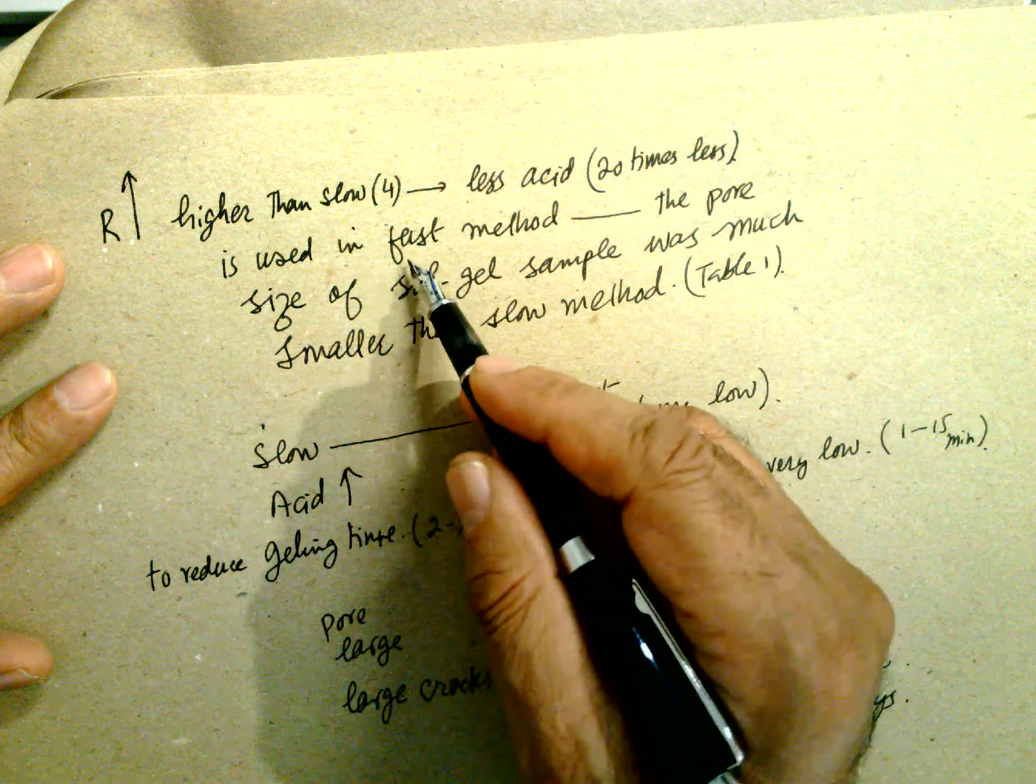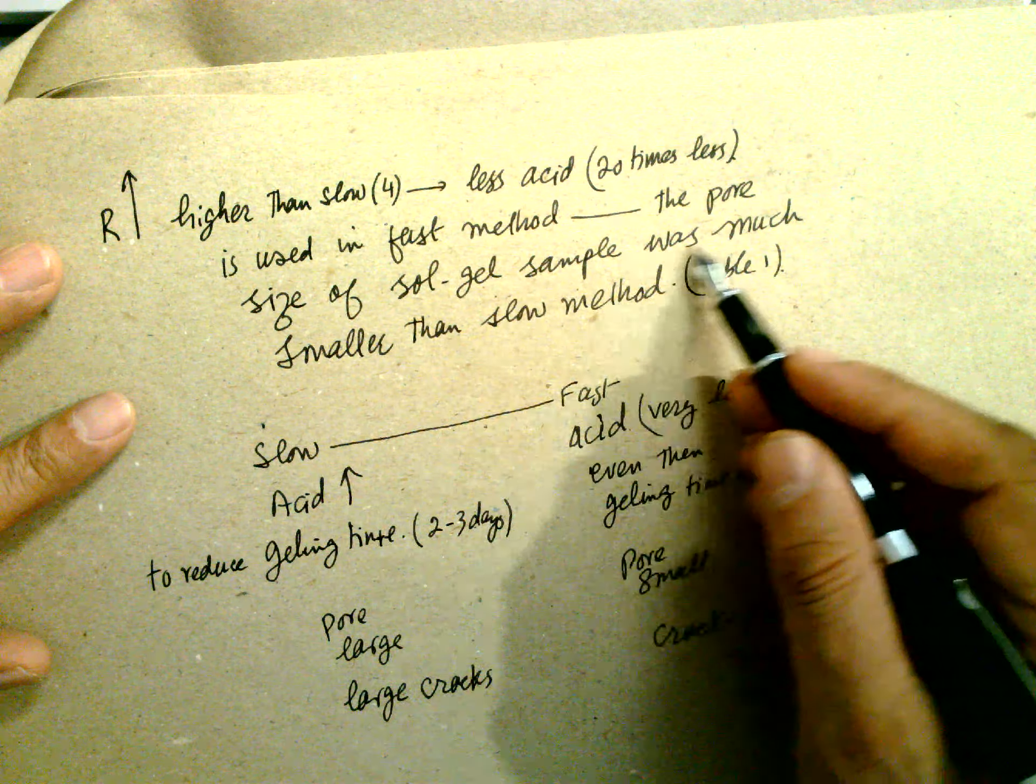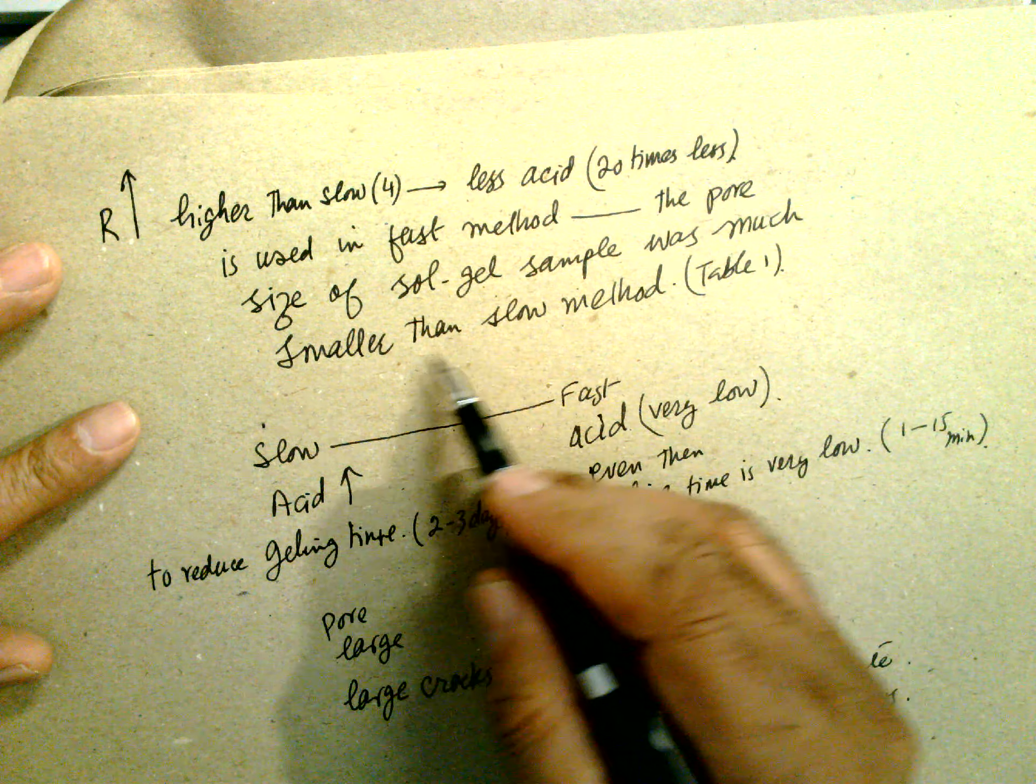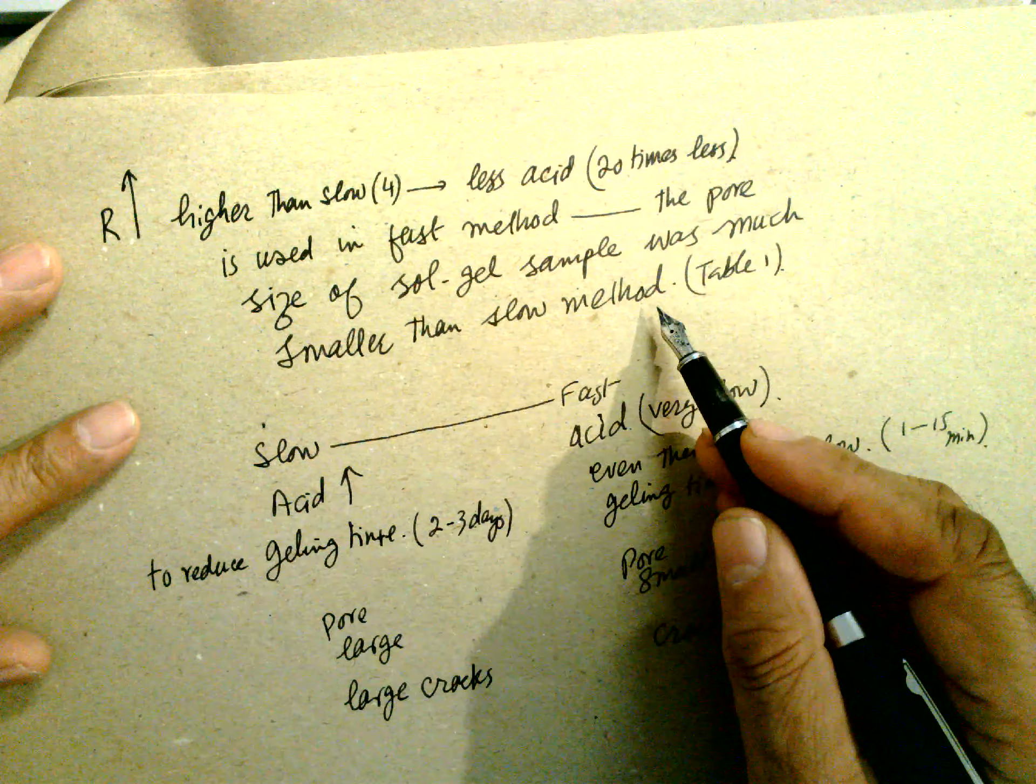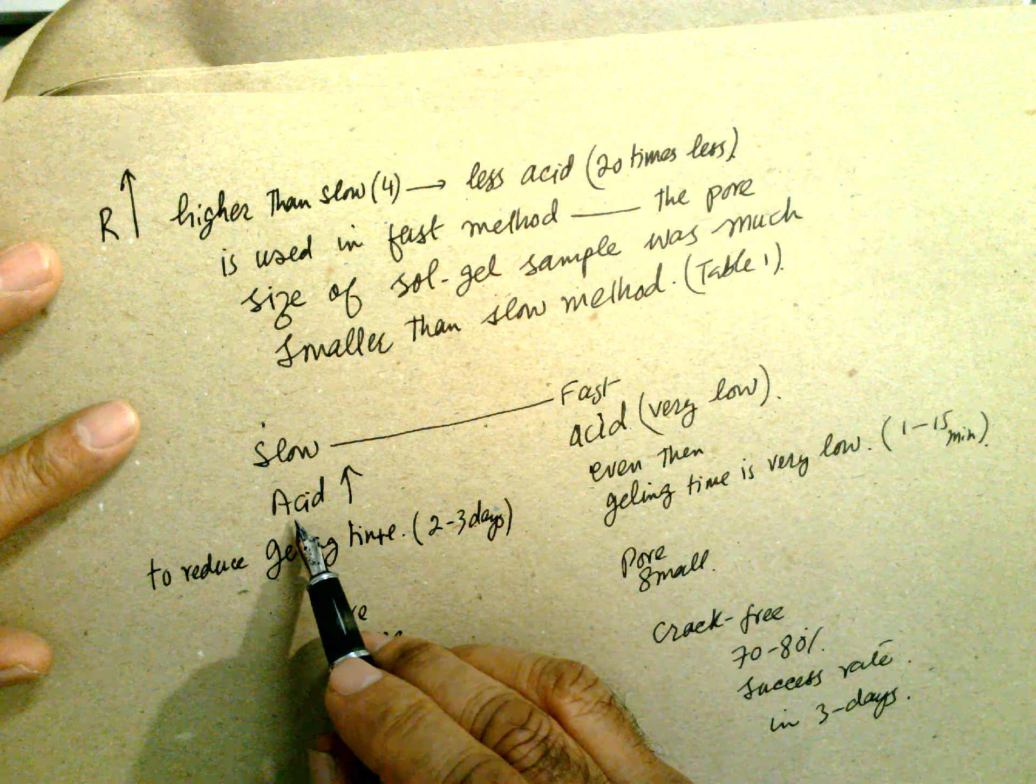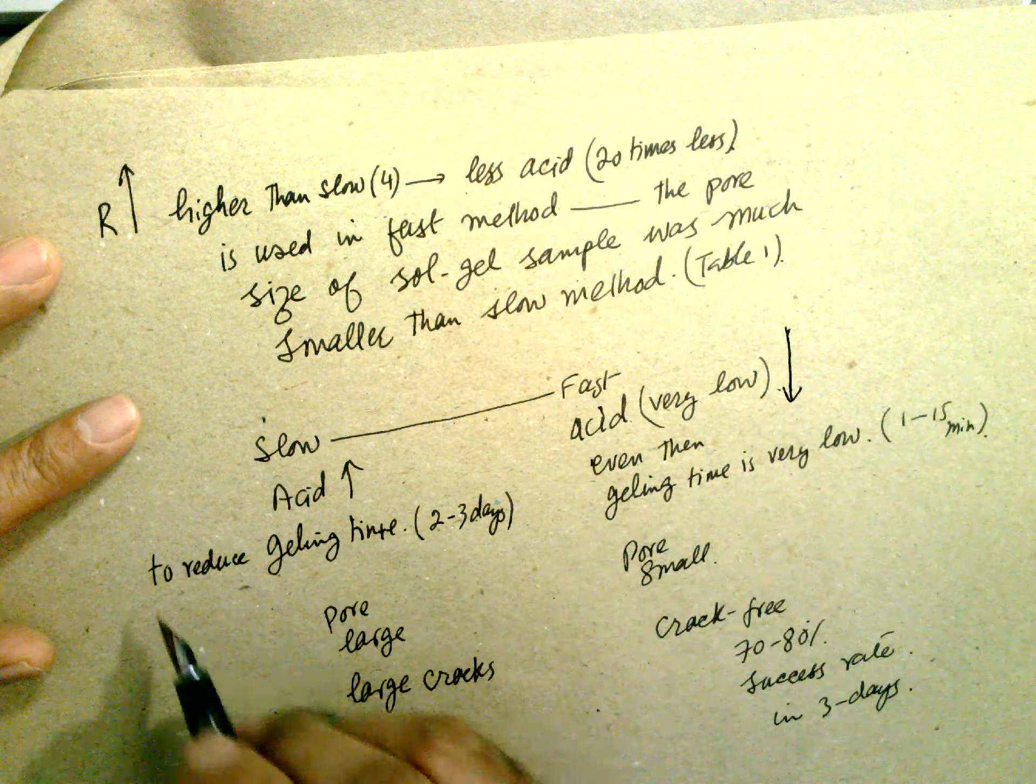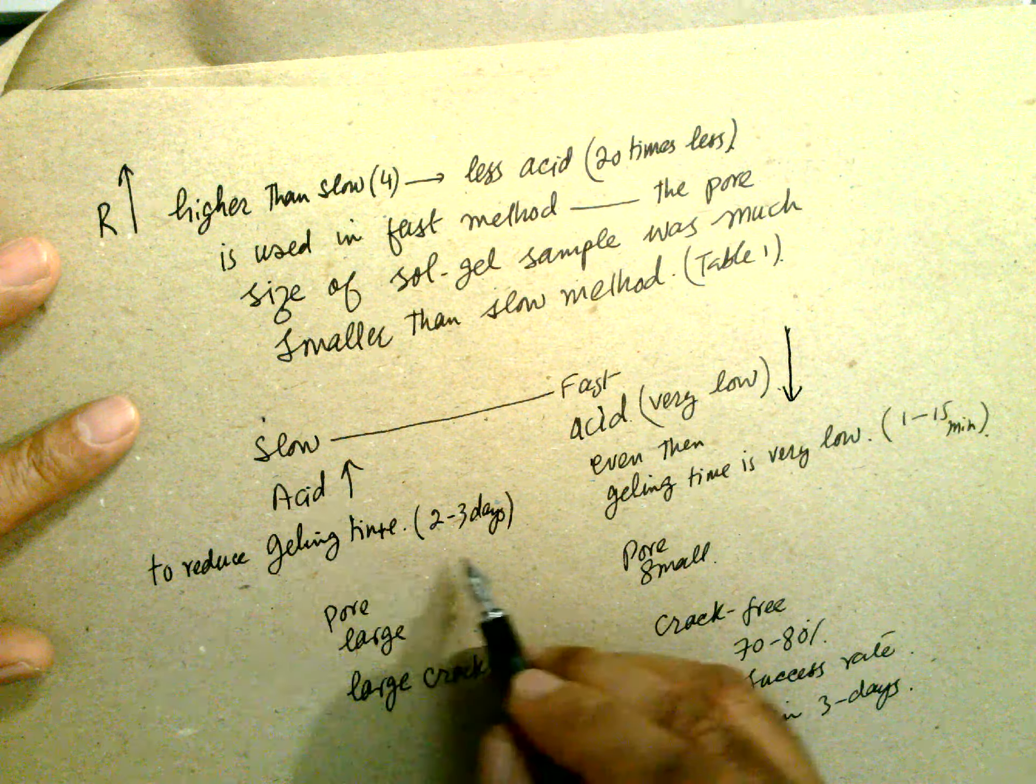As R increases higher than slow method, which is 4, less acid 20 times less than is used in fast method. The pore size of the sol-gel samples were much smaller than the slow method. Slow method, fast method. Acid is very high in slow method, acid is very low in the fast method.